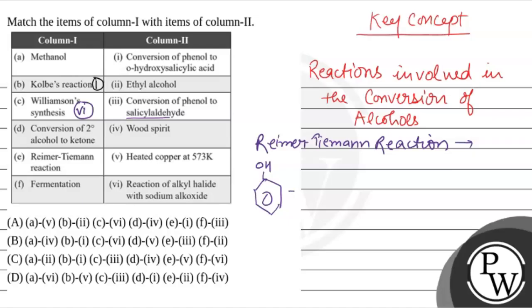So in this reaction, phenol plus CHCl3 plus 3NaOH gives OH-CHO. This is major product and this is minor. Here we get salicylic aldehyde.